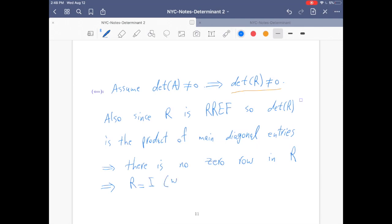And that implies R is I. Well, you have to think a bit more about why. If R is I, then by the fundamental theorem of invertible matrices, A is invertible.